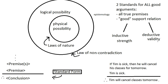Validity is about the highest standard we could ever hold a support relation to — we're asking for an absolute guarantee. No wiggle room at all, no other possibilities, no counterexamples out there. As long as the premises are true, it's a total 100% guarantee that the conclusion is true.